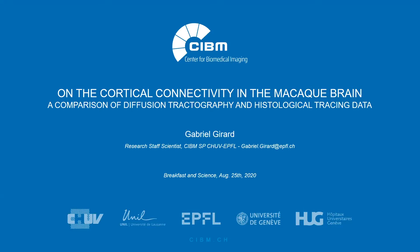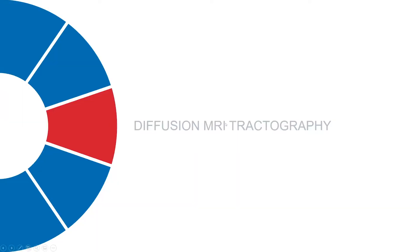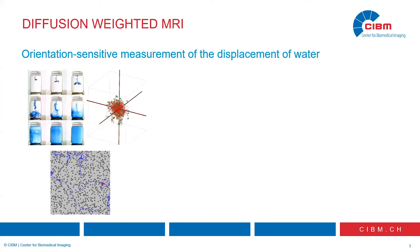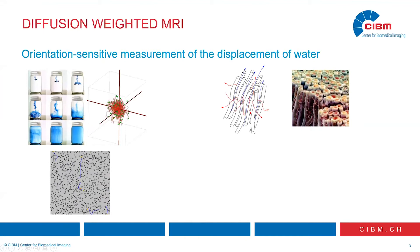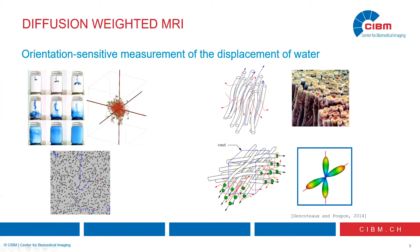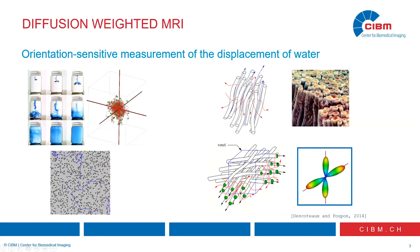Today I want to discuss diffusion tractography and validation, in particular a comparison of the structural connectivity estimated with diffusion MRI and from histological tracing data. Please feel free to stop me during the presentation for clarification. Diffusion MRI is sensitive to the microscopic displacement of water molecules. In a free medium, water molecules move uniformly in all orientations. However, in the brain — particularly in white matter — water molecules move primarily in the orientation of the axon, and faster along the axon direction, which allows us to estimate the orientation of axons in every voxel.